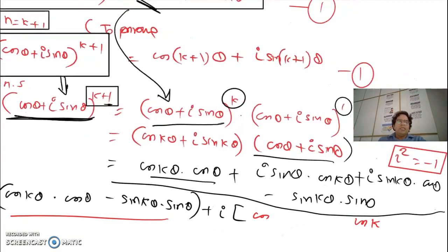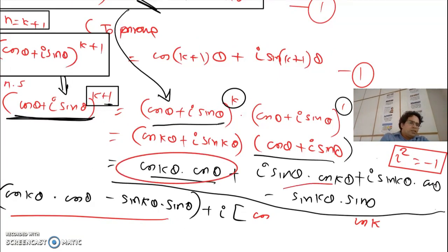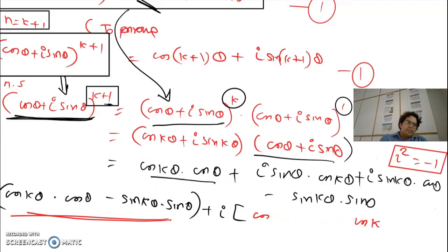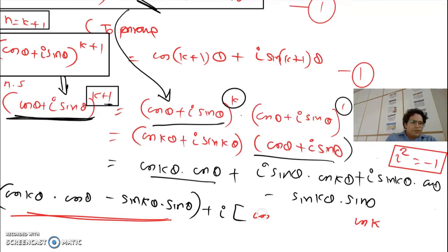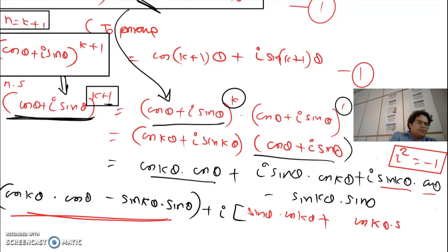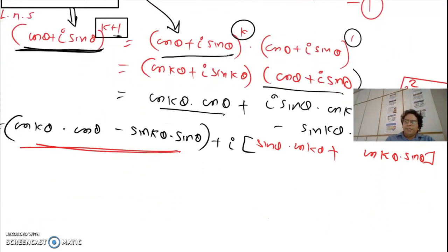The final step is to collect the real part and the imaginary part. There are two real parts — I collect them together into a single expression. For the imaginary part, we get sin θ cos kθ plus cos kθ sin θ. Using compound angle properties: cos(a+b) = cos a cos b − sin a sin b.